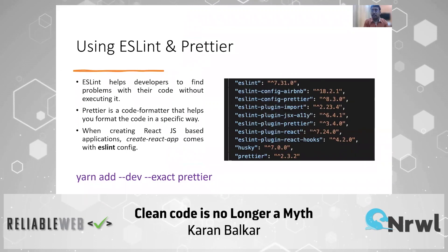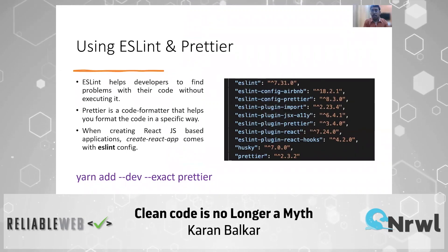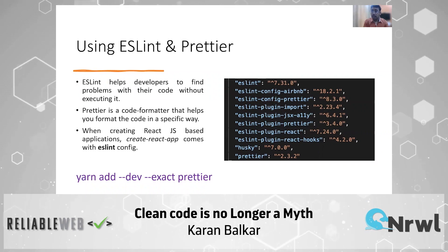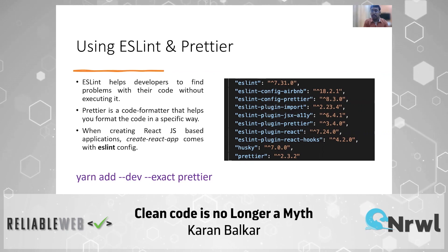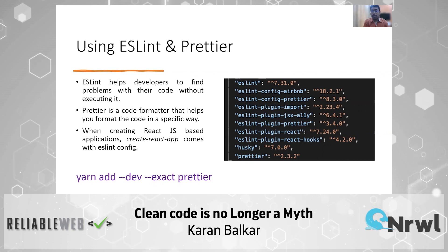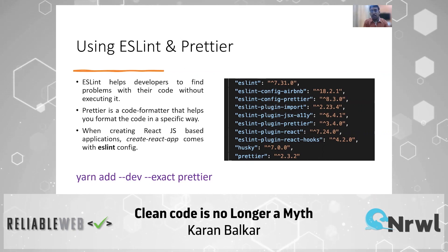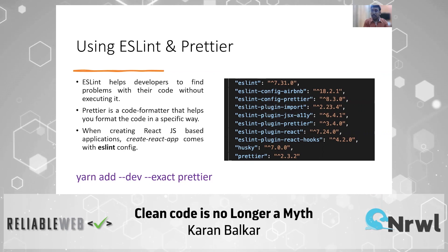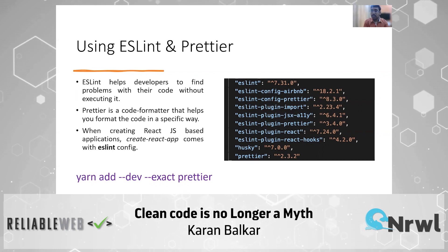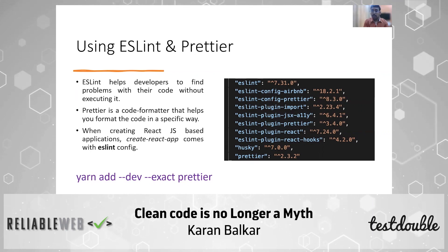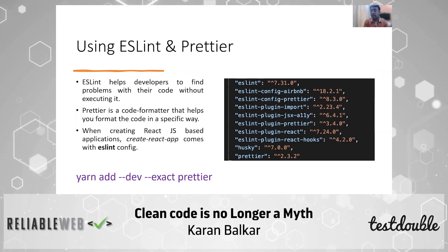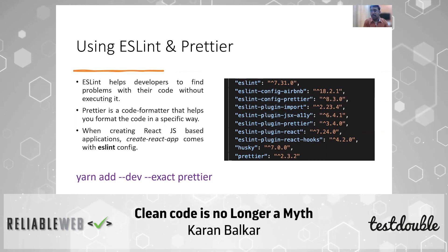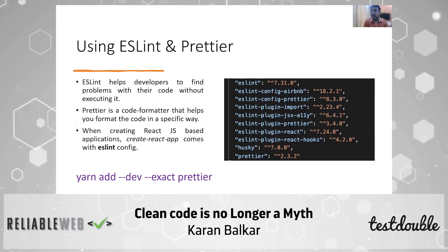ESLint is one of the most popular frameworks out there that allows developers to find problems in their code without executing it. Prettier is an opinionated code formatter that can be installed using a simple yarn command. ESLint also comes with a lot of plugins that one can install to leverage additional rules. And if you work on React, the Create React App comes with ESLint config already built in, so there are no additional dependencies needed unless explicitly required.